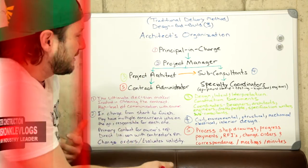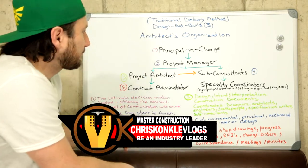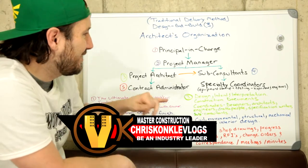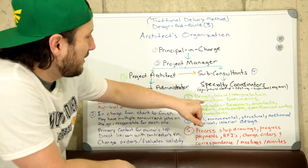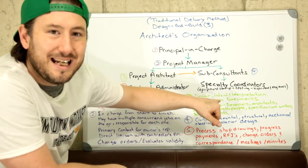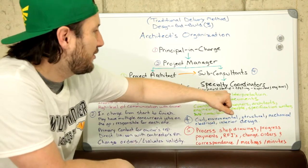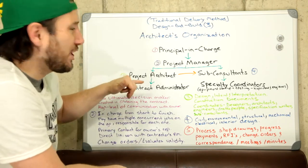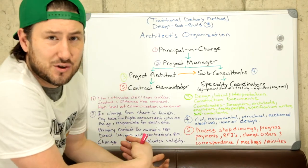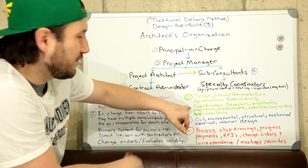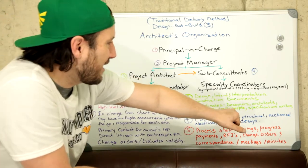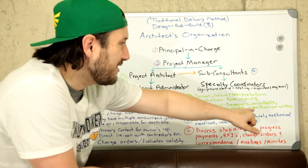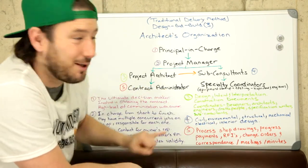For day-to-day change orders, the project manager will validate and approve or disapprove them, while the principal in charge handles major decisions. The project architect is the person in charge of the design and also explaining the intent and interpretation of the design. When RFIs come in, it's the project architect who gets those clarifications done.